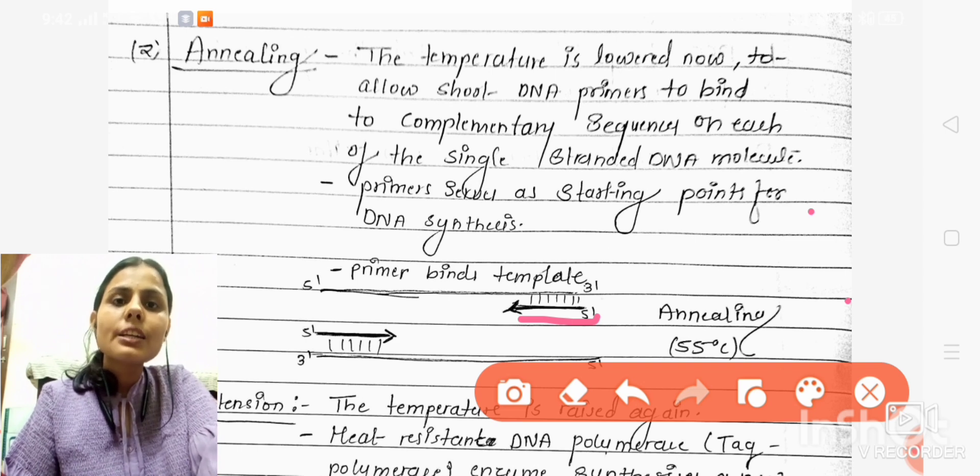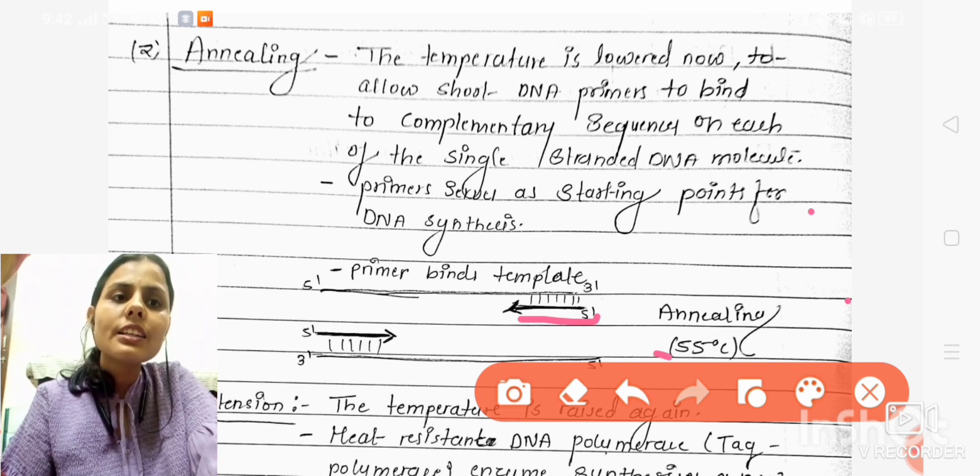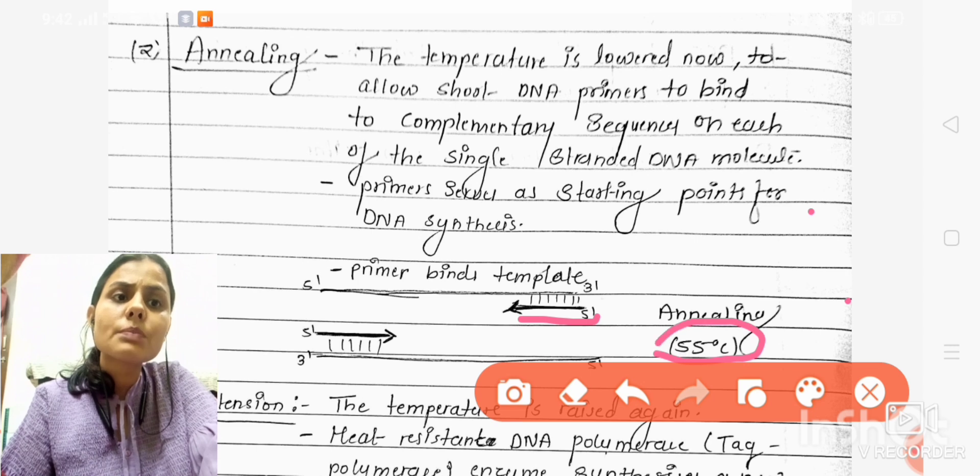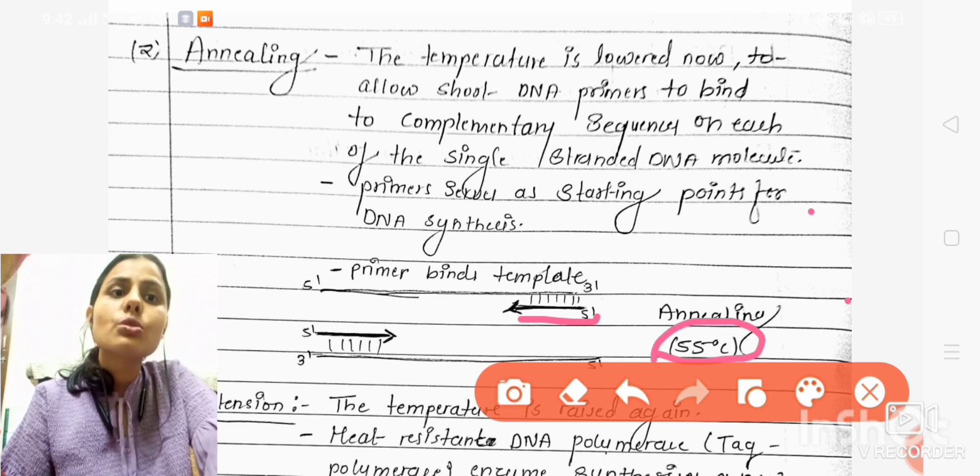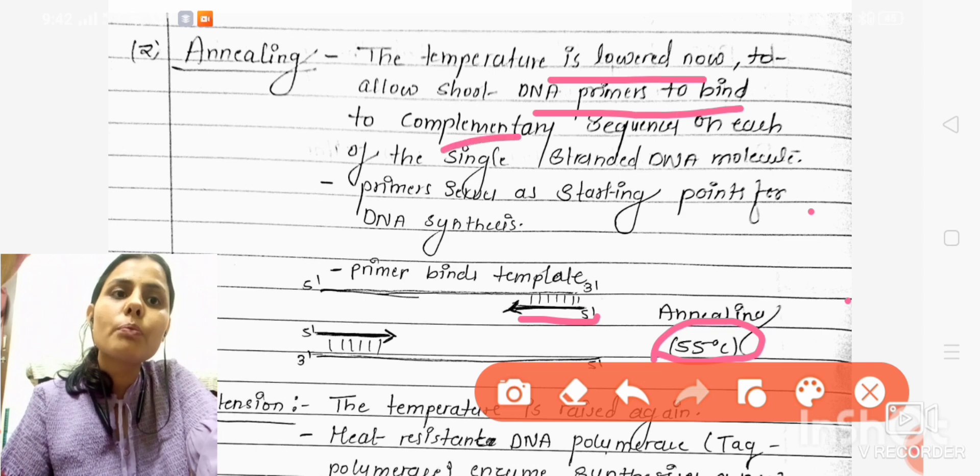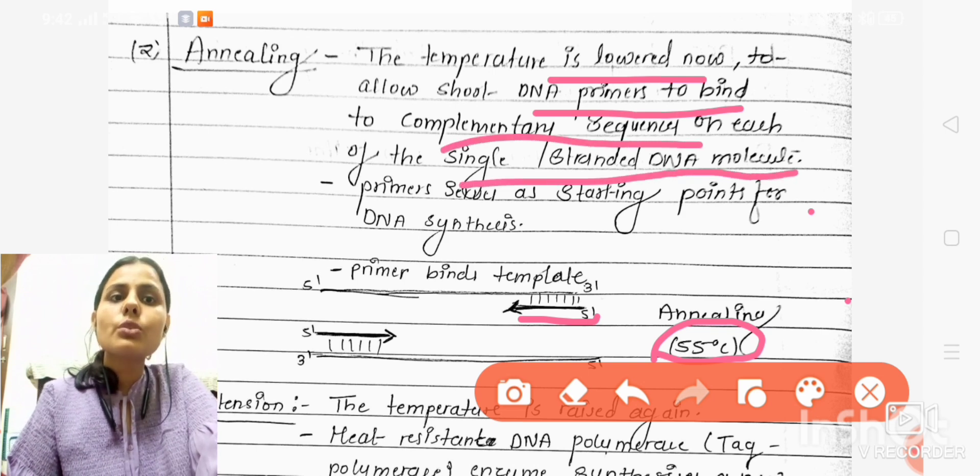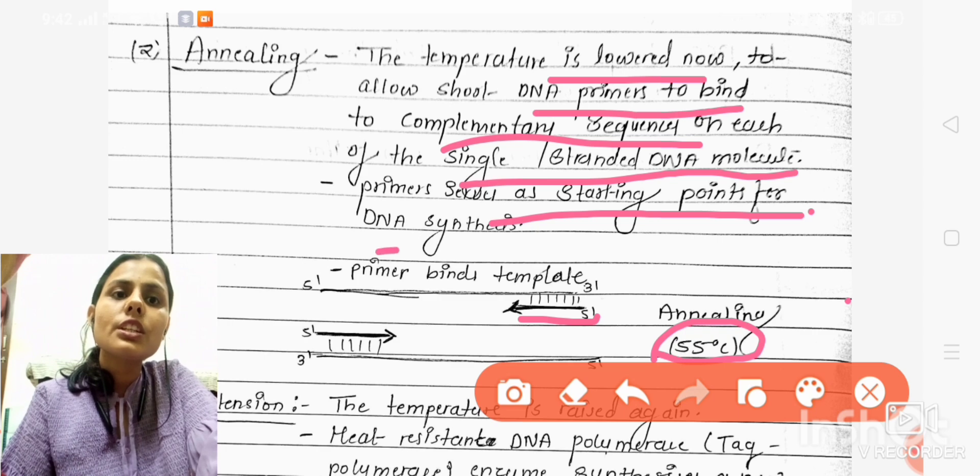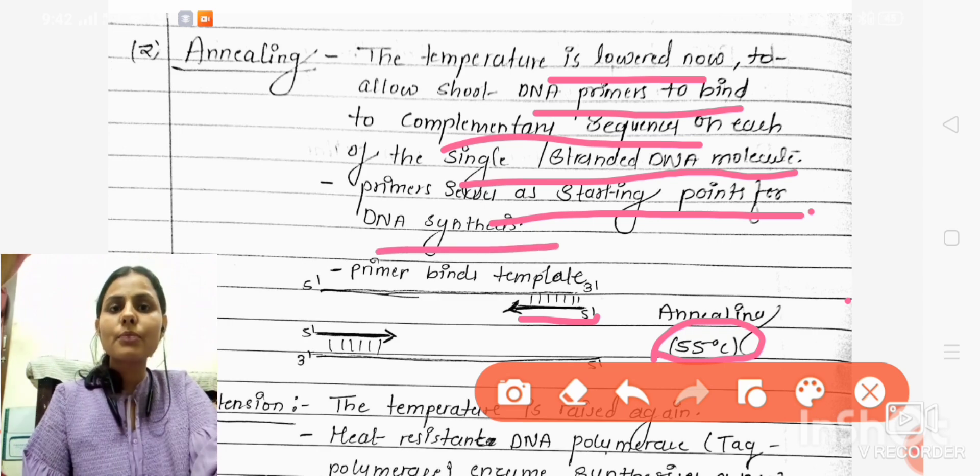In this step, the temperature is lowered and this process takes place at approximately 55 degrees Celsius. The DNA primers bind to the complementary sequence on each single-stranded DNA molecule, acting as a starting point for DNA synthesis. This was all about annealing.